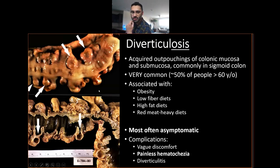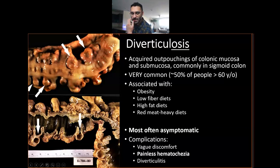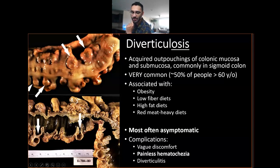Diverticulosis has very classic features — basically just outpouching of your layers, and they kind of look like polyps. One thing I want to point out is that diverticula and polyps can look very similar and deceiving in a picture like this. Just remember that polyps go into the lumen and diverticula pop out of the lumen. Pay attention to where the lumen is, because it can be very deceiving, especially in UWorld or exam pictures.